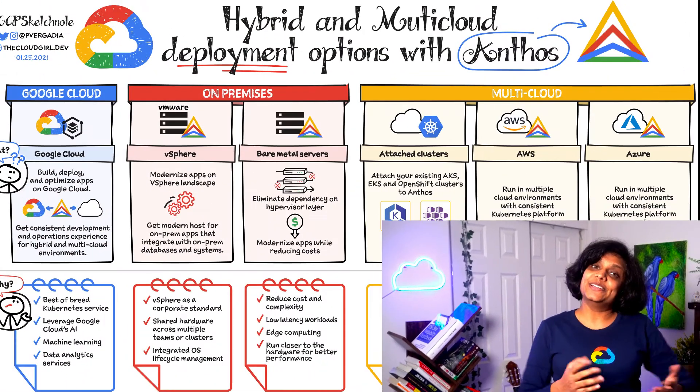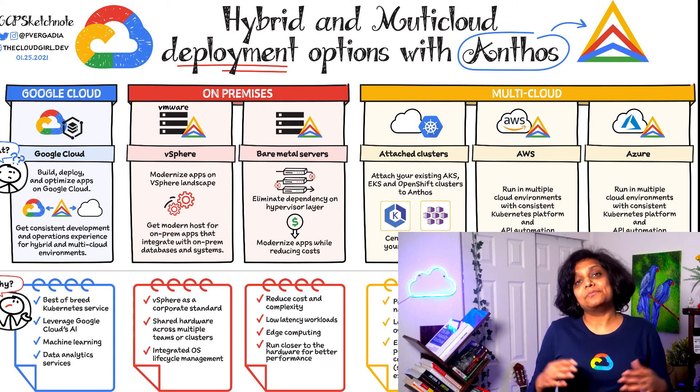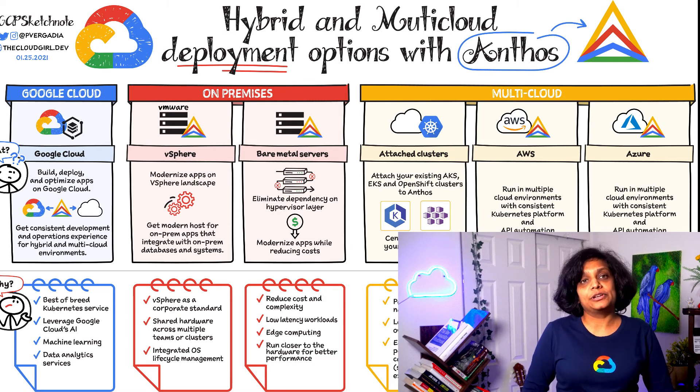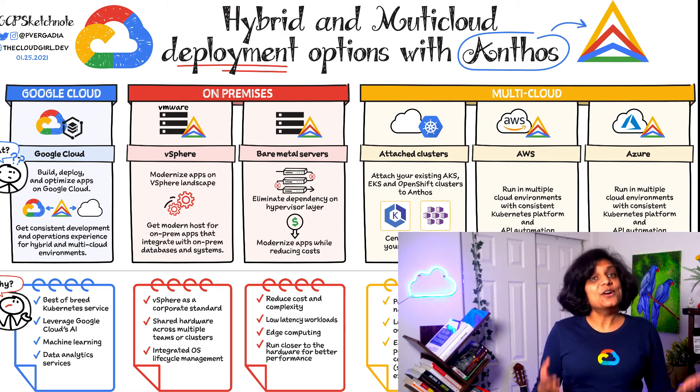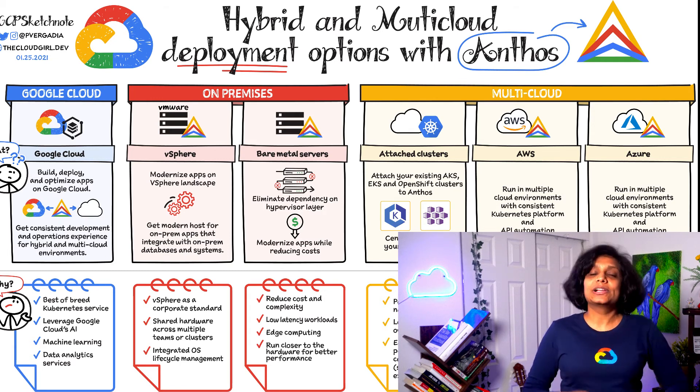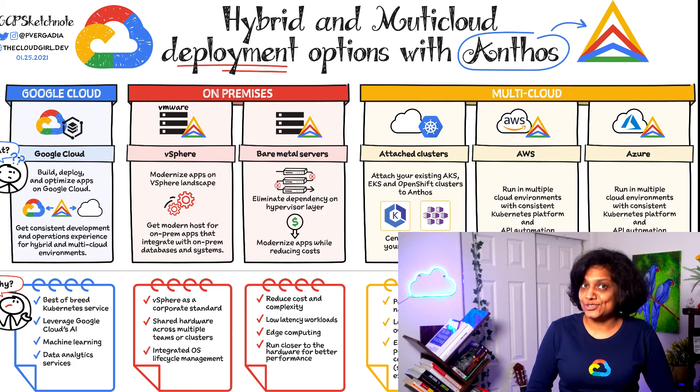So there you have it — six different hybrid and multi-cloud deployment options with Anthos. Depending on where your infrastructure is today, one or a few of these options will lead you to your cloud modernization journey. If you want to learn more, I have included a link to an entire blog below. If you are liking the GCP Sketchnote series, please let me know in the comments below, and don't forget to subscribe for a new episode weekly.